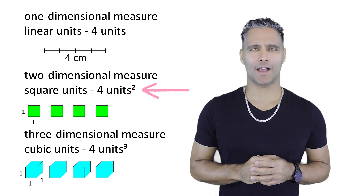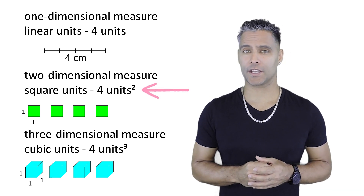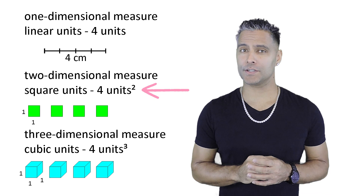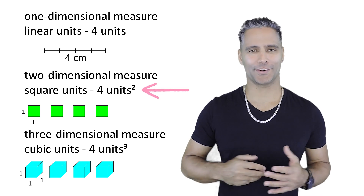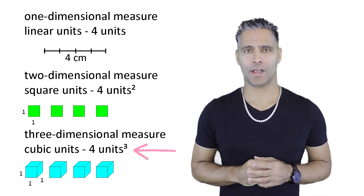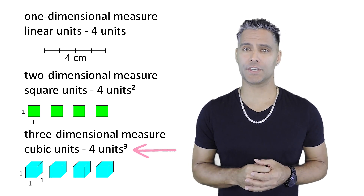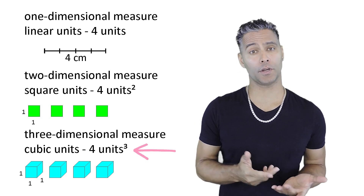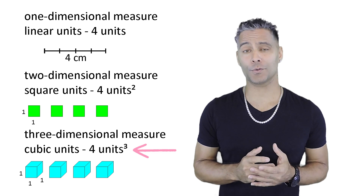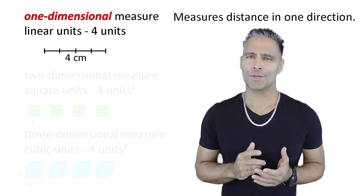With two-dimensional objects, we label the units with an exponent of two, which represents two dimensions, or square units. And with three-dimensional objects, we label the units being used to measure the object with an exponent of three, which represents three dimensions, or cubic units.